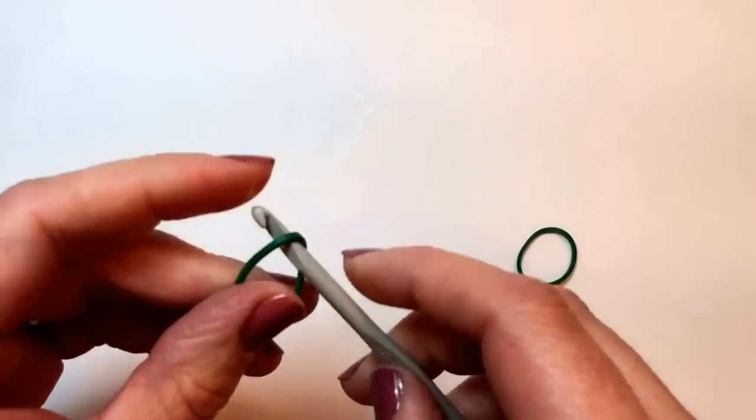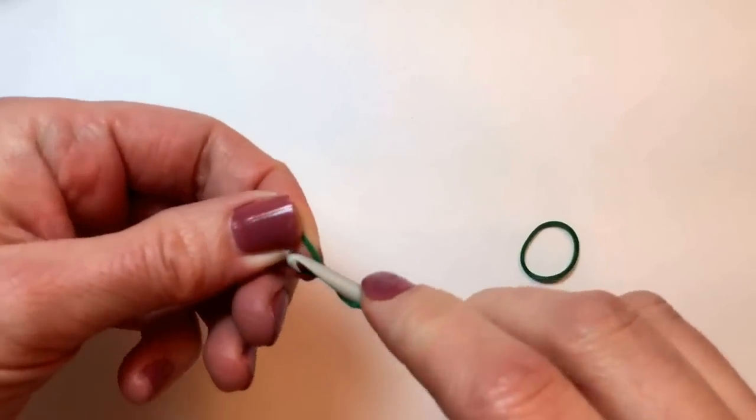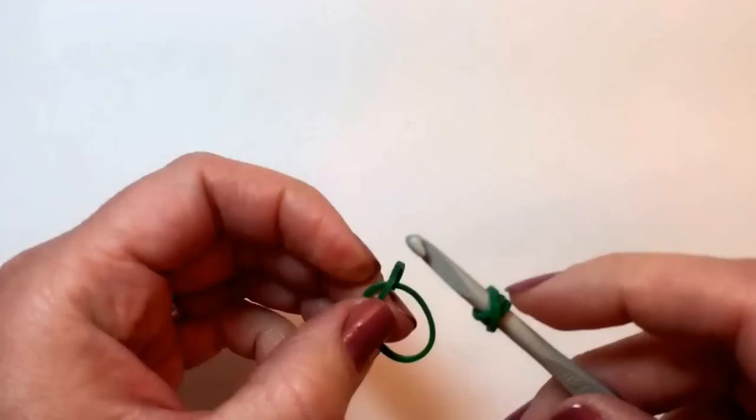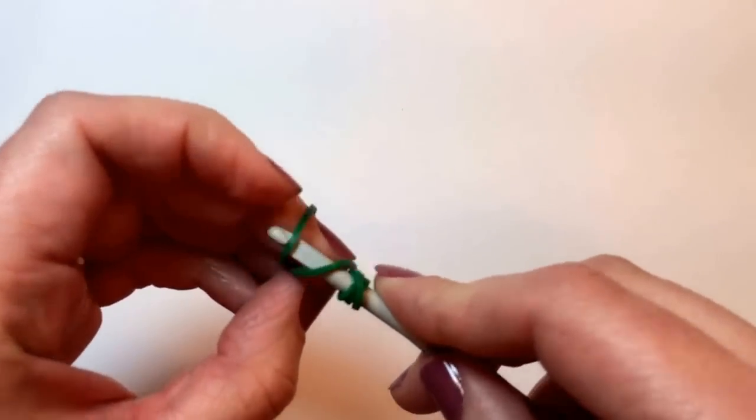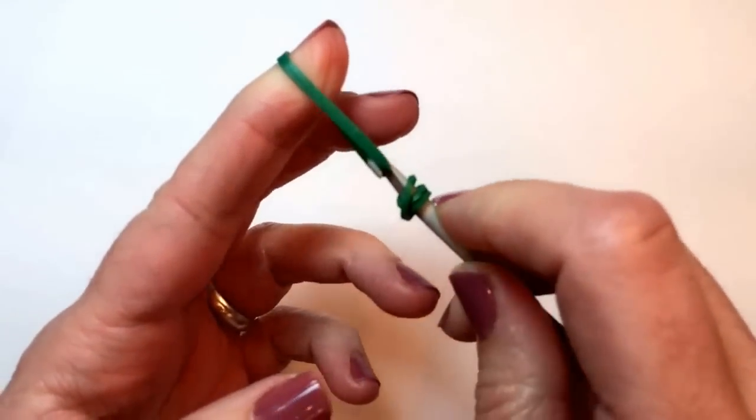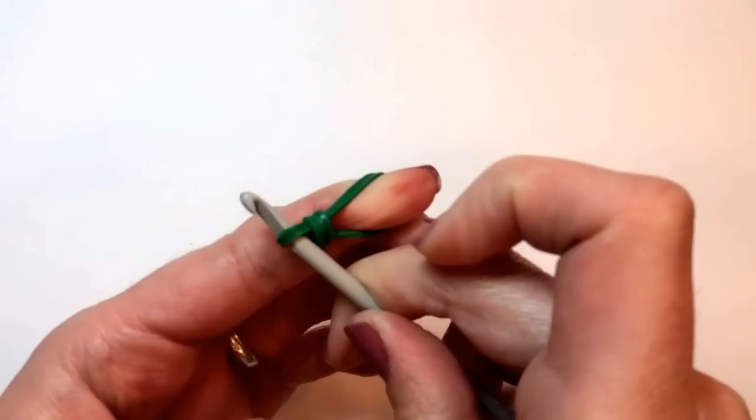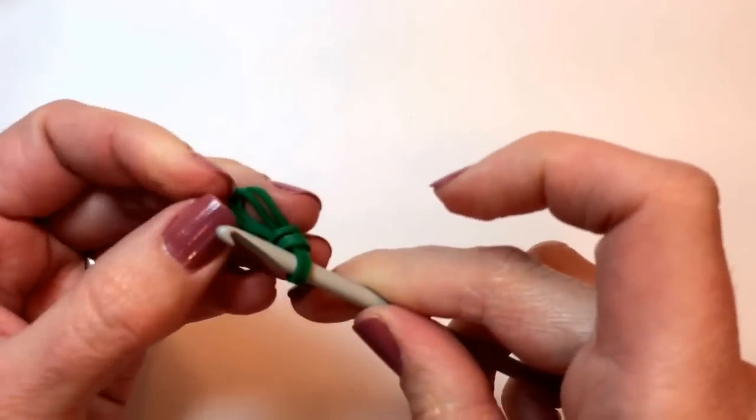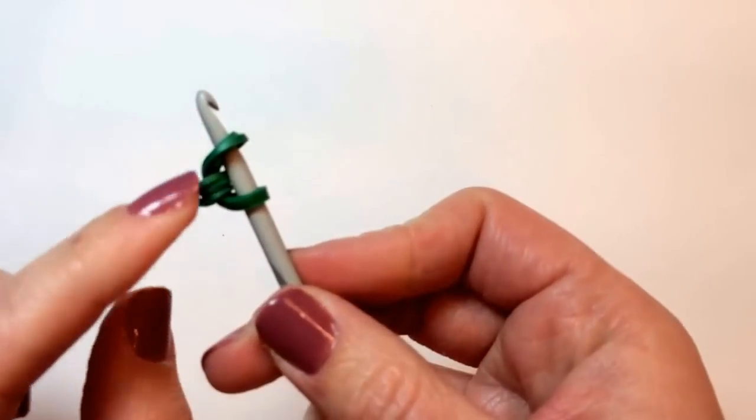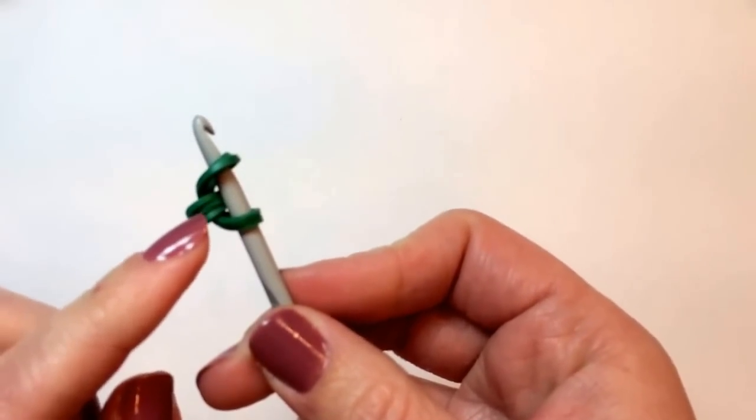To begin with, you take your hook and you grab a single rubber band and you wrap it around three times. Then you take two more rubber bands and you hook them on and slide those three bands to the center, and then put your hook back in the other side so that you have the U shape with the tripled over band in the middle.